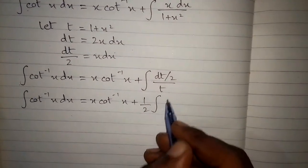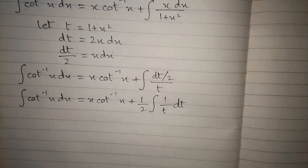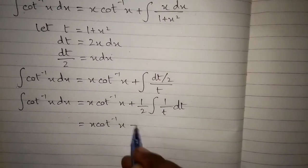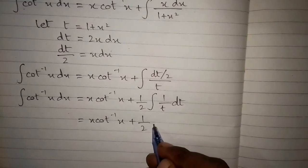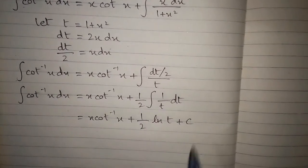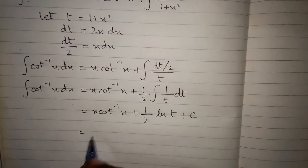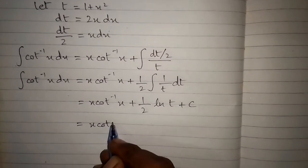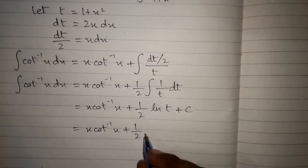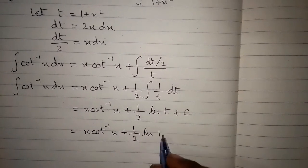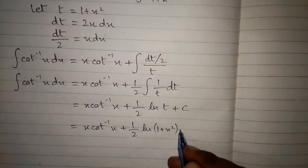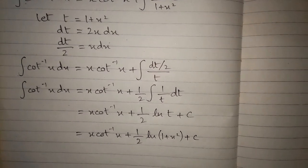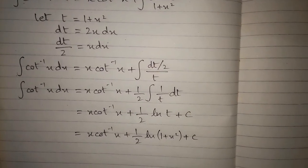We write this as one half times the integral of 1 upon t dt. Since the integral of 1 upon t is ln t, we get x cot inverse x plus one half of ln t plus c, where c is the constant of integration. Substituting back t equals 1 plus x squared, the final answer is x times cot inverse x plus one half times ln of 1 plus x squared plus c.